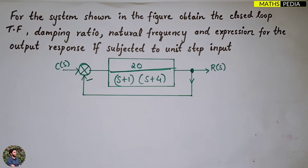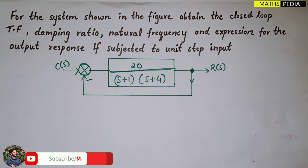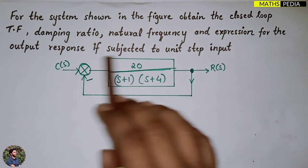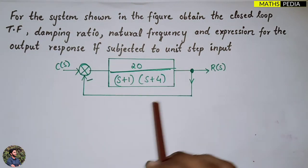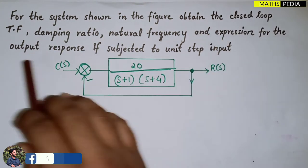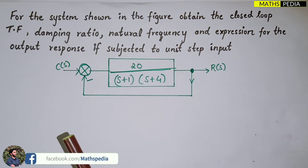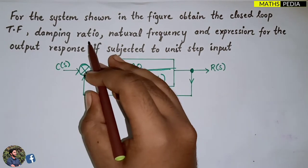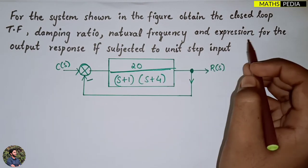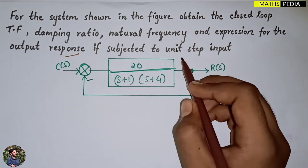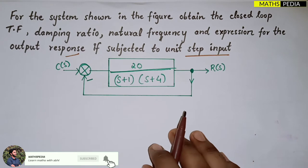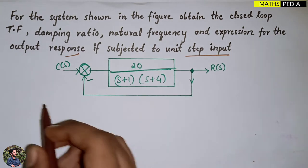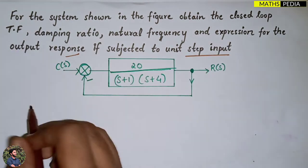In this video we are going to solve one problem based on how to find the damping ratio, natural frequency, expression for output response, and all. So let us see the question: for the system shown below, obtain the closed-loop transfer function C(s)/R(s), then the damping ratio, natural frequency, as well as the output response if it is subjected to a unit step input.